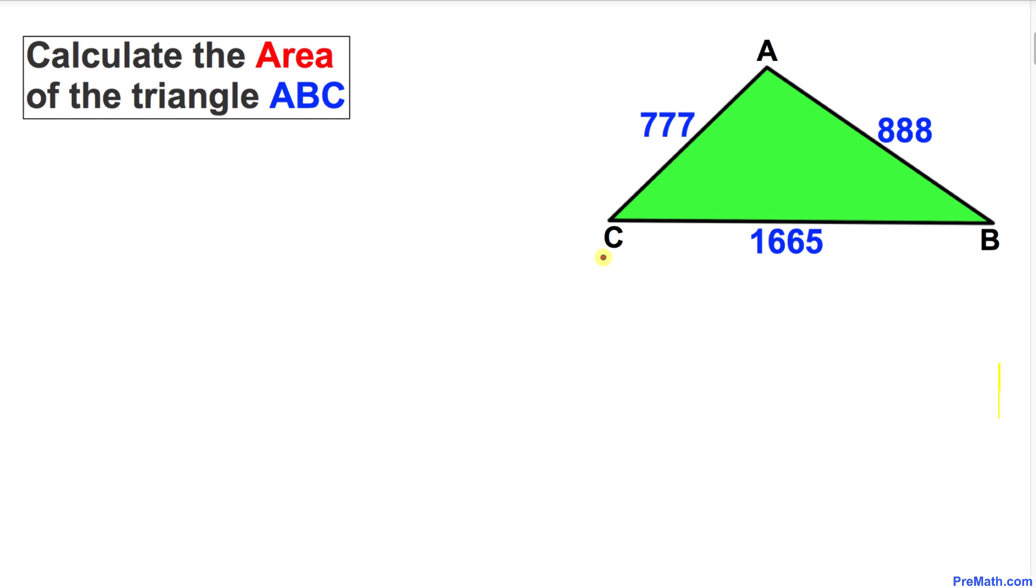Welcome to PreMath. In this video tutorial, we have triangle ABC with side lengths 777, 888, and 1665 as you can see in this figure, and we are going to calculate the area of this triangle.